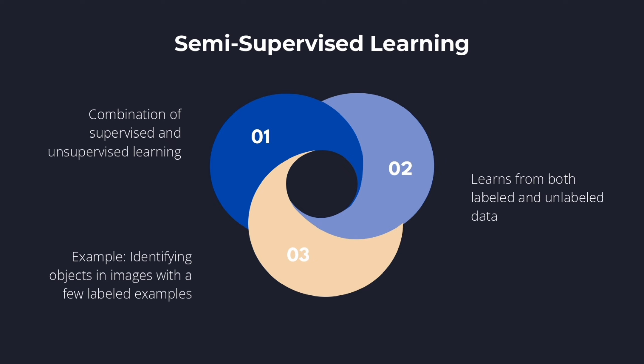Semi-supervised learning: a mix of supervised and unsupervised learning, where algorithms learn from both labeled and unlabeled data for tasks like identifying objects.